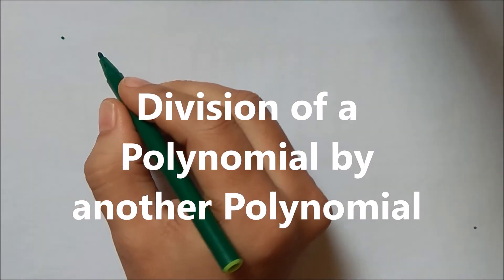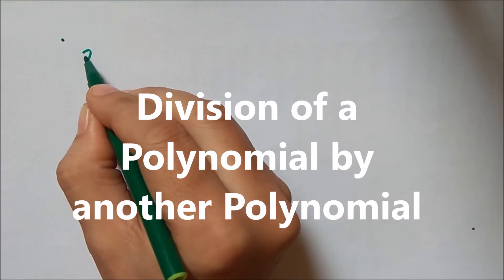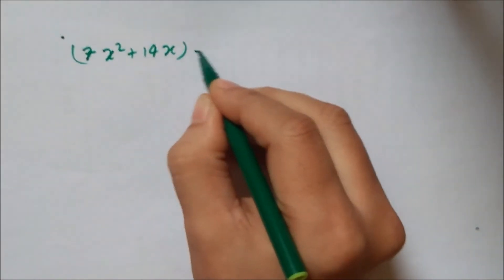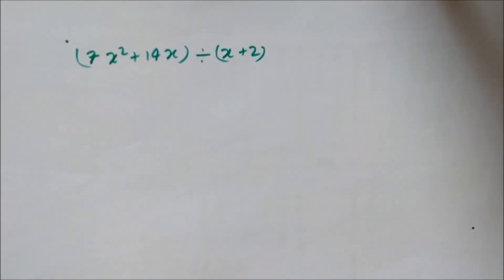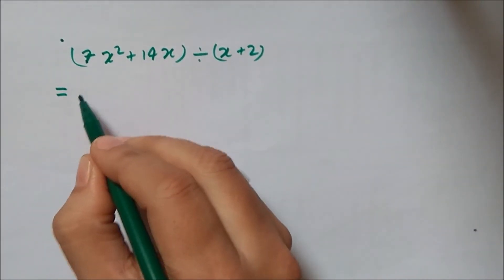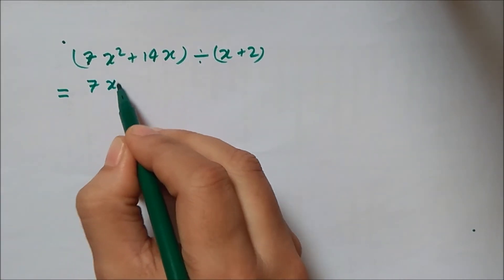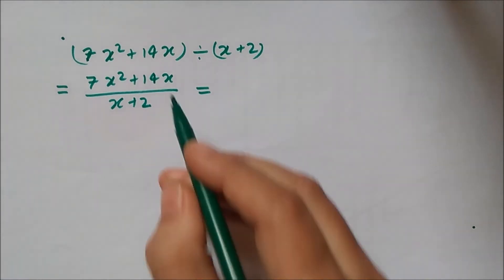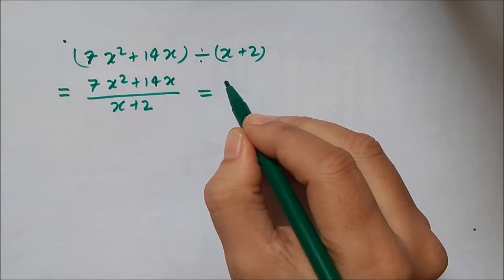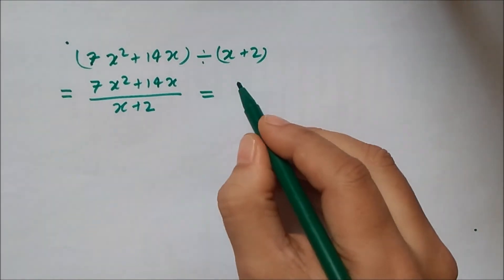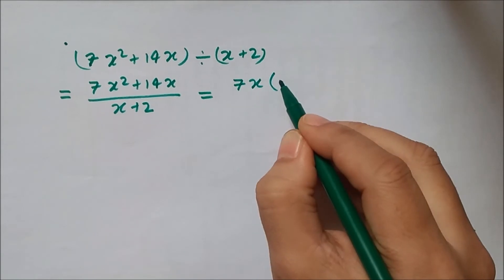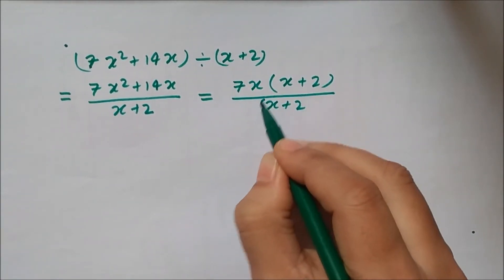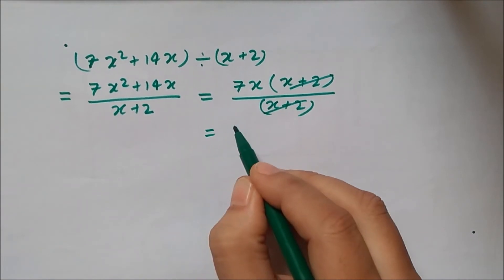The third case is division of a polynomial by a polynomial. Take 7x squared plus 14x, divided by x plus 2. We factorize the numerator using the common factor 7x, giving 7x(x plus 2) divided by (x plus 2). The (x plus 2) cancels out, and the result equals 7x. For polynomial division, factorization of both the numerator and denominator is a necessary step.